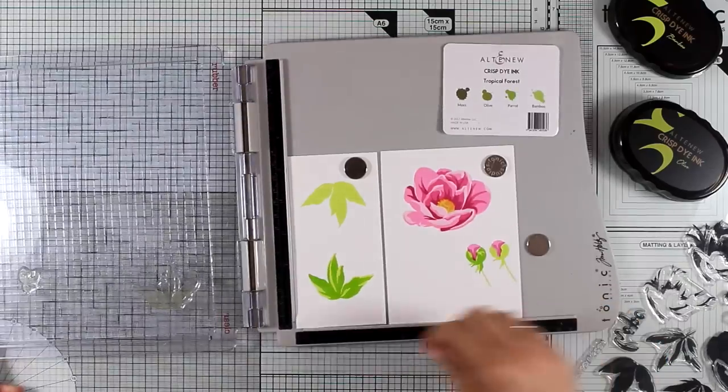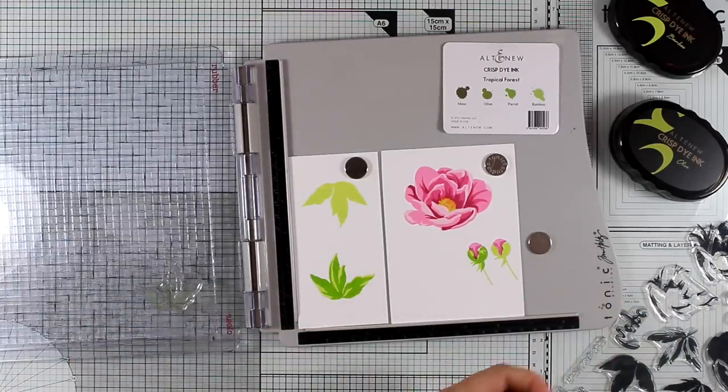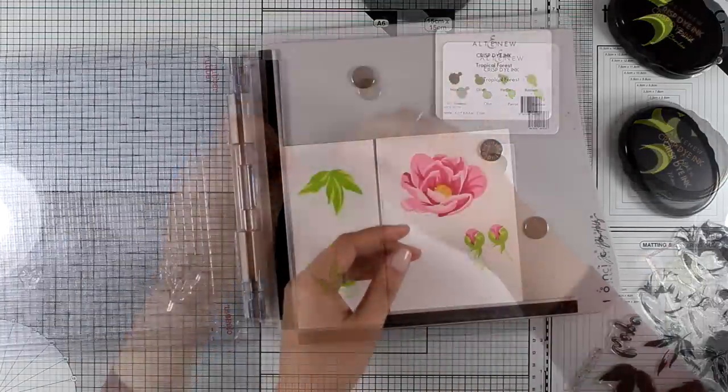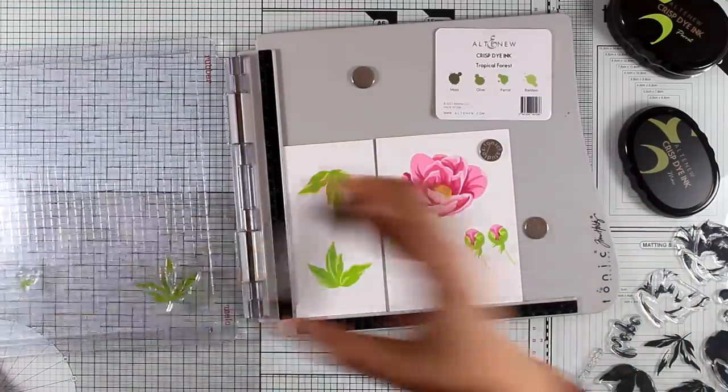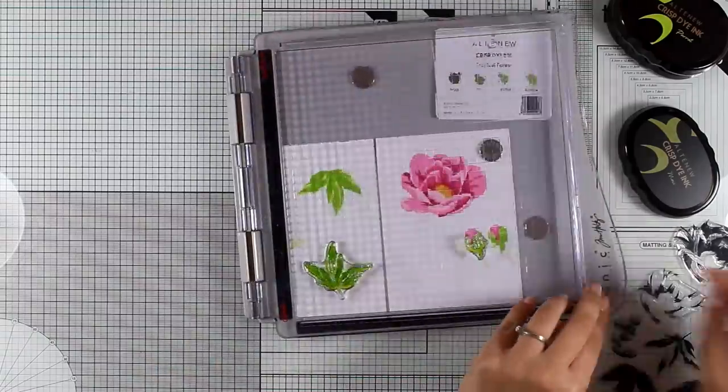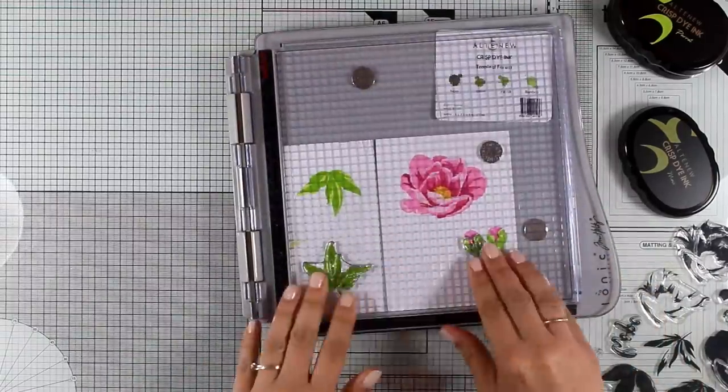And you see I'm using my stamping platform to do multiple stamping there. So I'm working at the same time on the leaves as well as on the flower buds. So here is Olive ink pad for the last layer of the leaf.